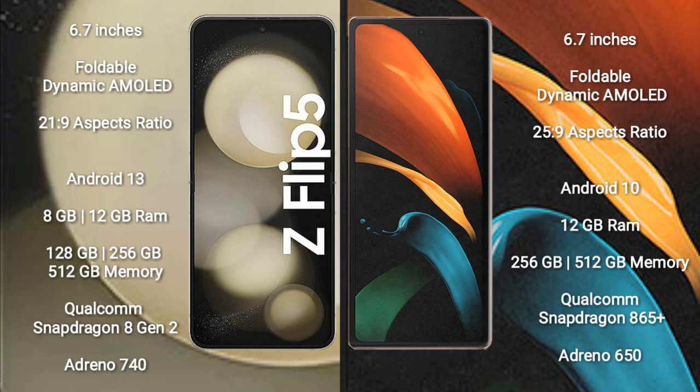The Samsung Galaxy Z Flip 5 comes with 8GB or 12GB RAM and 128GB, 256GB, or 512GB internal storage, powered by a Qualcomm Snapdragon 8 Gen 2 processor with Adreno 740 GPU. The Samsung Galaxy Z Fold 2 comes with 12GB RAM and 256GB or 512GB internal storage.